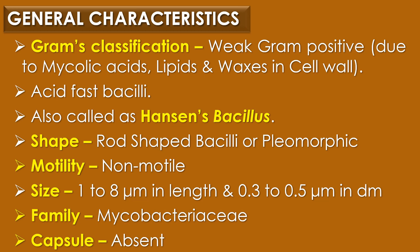Mycobacterium leprae is a weak gram-positive bacteria due to the presence of mycolic acids, lipids and waxes in its cell wall. It is coming under the category of acid-fast bacilli and it is also called as Hansen's bacillus. Regarding the shape, it is a rod-shaped bacilli but sometimes it is pleomorphic in nature. It is non-motile in nature and its size is ranging from 1 to 8 micrometer in length and 0.3 to 0.5 micrometer in diameter. And it belongs to the family Mycobacteriaceae.